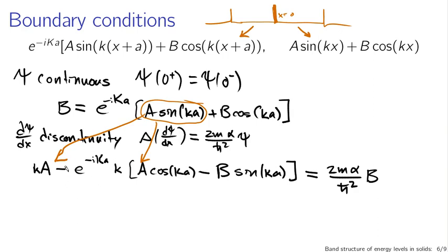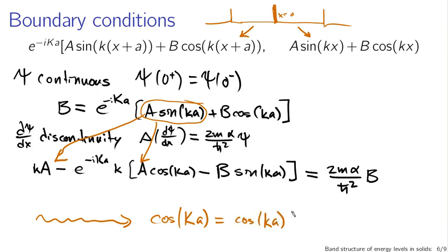After making the appropriate simplifications to get rid of the complex exponential, you end up with cosine(Ka) on the left. Subject to a lot of algebra that I'm skipping, the end result is: cos(Ka) = cos(ka) + (mα / ℏ²k)·sin(ka). This equation relates lowercase k — which is related to our energy — to uppercase K from Bloch's theorem, and the strength of the delta function and the mass of the particle. This is what will tell us the allowed energies.